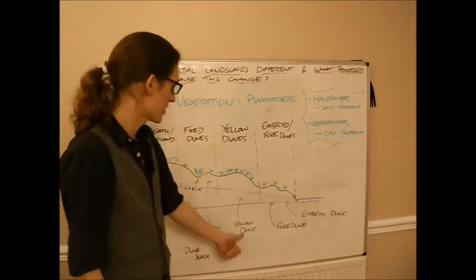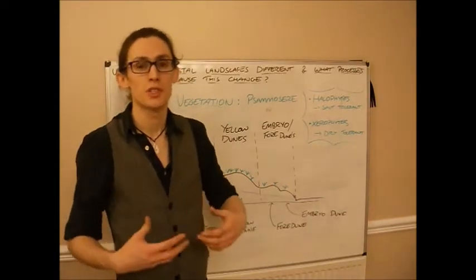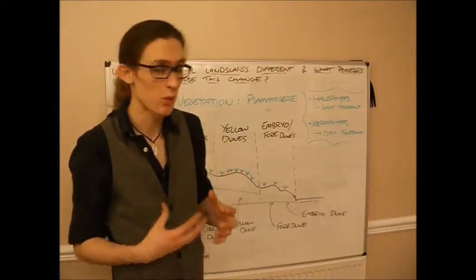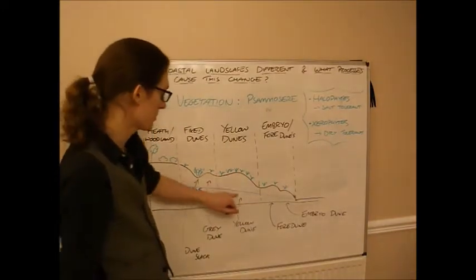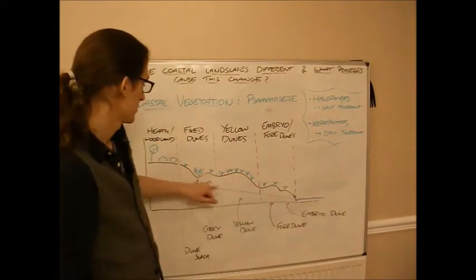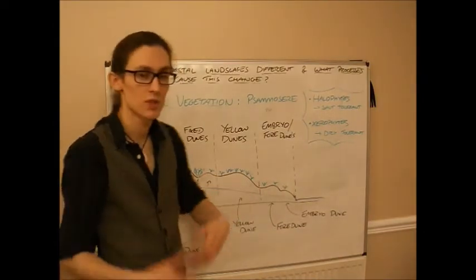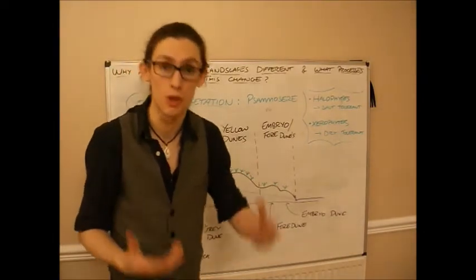Coming back a stage, we've got the yellow dunes. They're yellow because they tend to be more permanent, often have a bit more water in them. The water table, the height of the water within the ground, is a little bit higher. So it tends to be a bit more moisture, but it's salt water generally.